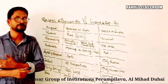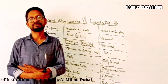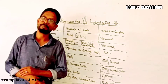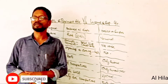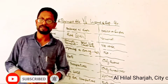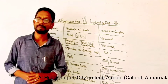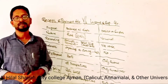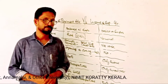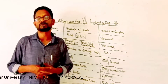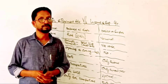In the last videos, we were explaining the final accounts of Non-Profit Making Organizations. It consists of three parts: Receipt and Payment Account, Income and Expenditure Account, and finally Balance Sheets. These are the final accounts of Non-Profit Making Organizations.